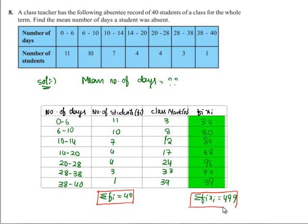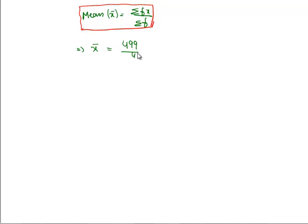According to the formula, the value of mean (x̄) is equal to Σfi×xi divided by Σfi. And we get 499 by 40 is equal to 12.47. That is the mean number of days a student was absent.